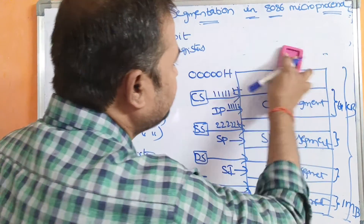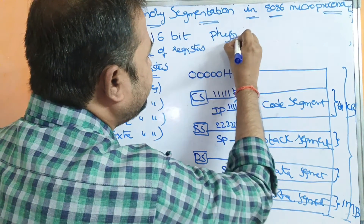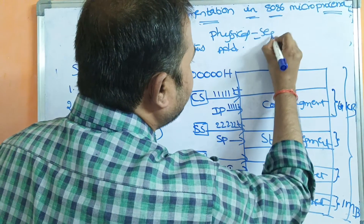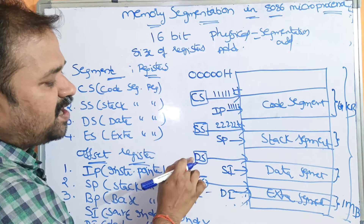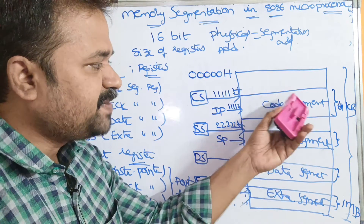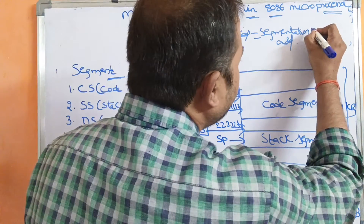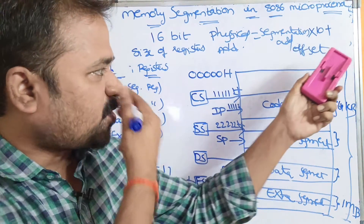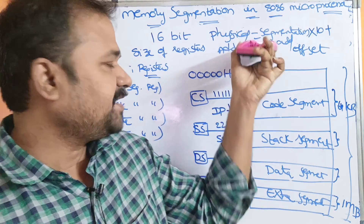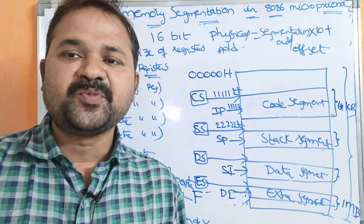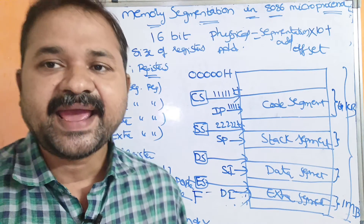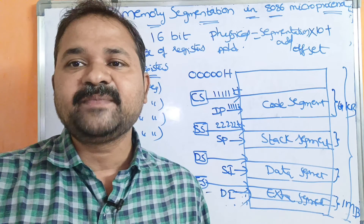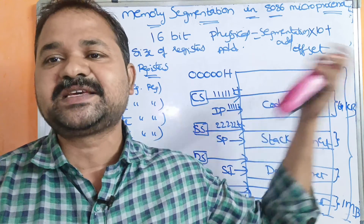In order to calculate the physical address, the formula is: Physical Address = Segment Address × 10H + Offset. The segment address may be the Code Segment, Stack Segment, Data Segment, or Extra Segment address. According to these values, we can calculate the physical address, and based upon the physical address, the microprocessor will execute the next instruction. This is how memory segmentation works in the 8086 microprocessor — dividing the main memory into various segments and storing the corresponding segment data according to our requirement.